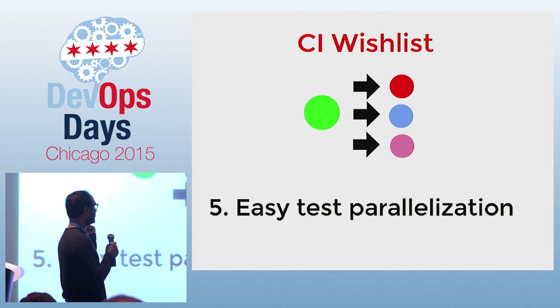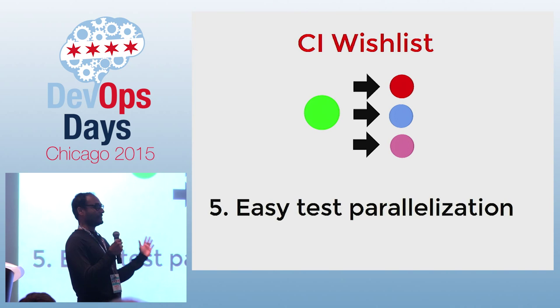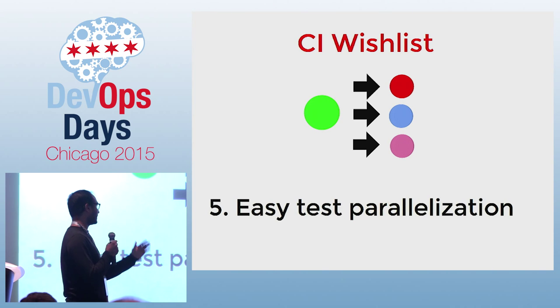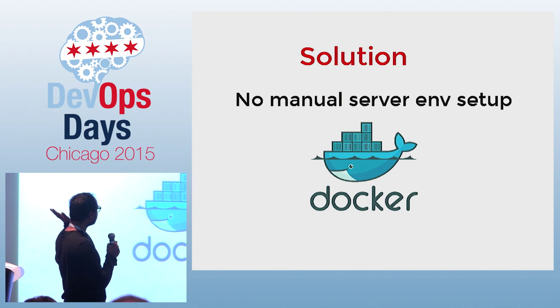The fifth item is easy parallelization, which ties back to resource utilization. Slow CI is worse than having no CI, so I want my tests to be parallelized. Let's talk about solutions to all those problems.